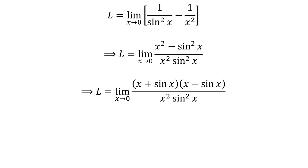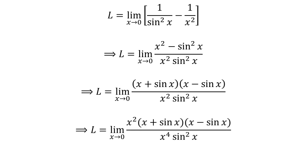In the above limit, I have factorized the numerator as x plus sin of x times x minus sin of x. As multiplying the numerator and the denominator of a fraction by a common factor does not change the value of the fraction, let us multiply the numerator and the denominator by square of x. So L is equal to limit of square of x times x plus sin of x times x minus sin of x upon x raised to the power of 4 times square of sin of x as x approaches 0.